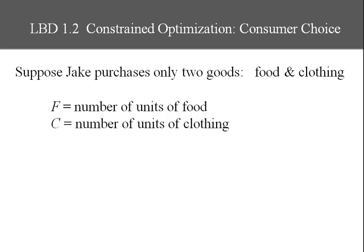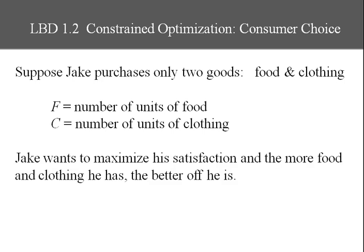F will be the number of units of food and C will be the number of units of clothing. Now Jake wants to maximize his satisfaction or utility and the more food and clothing he has, the better off he is.